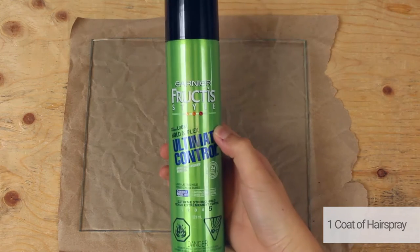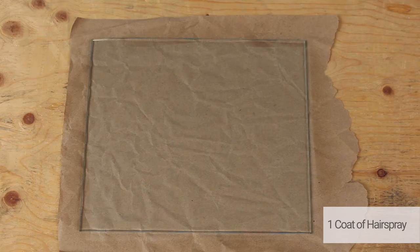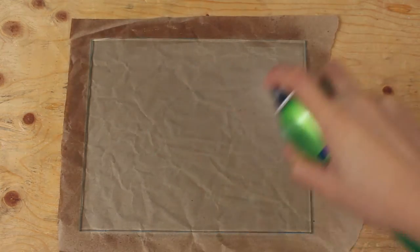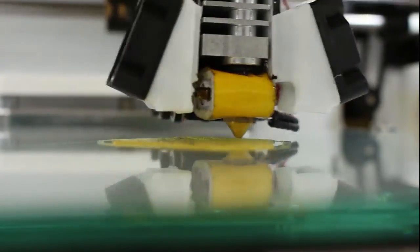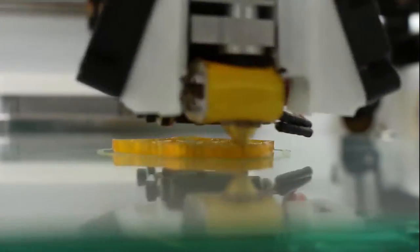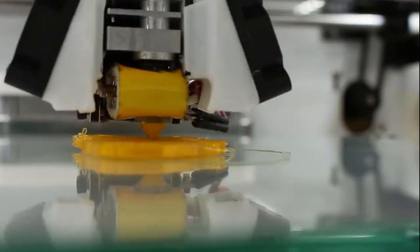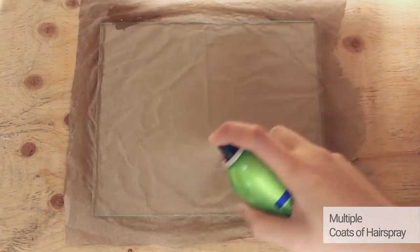Now it's the Fructis Style Ultimate Control Extreme Strong Hold. We are going to be consistent with the quantity we put on, so one coat first. The filament is sticking on the first layer, second layer, but it fell off in the end. Now drenching the glass bed with the hairspray.